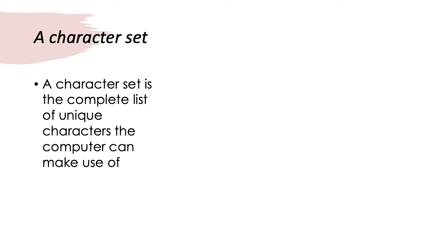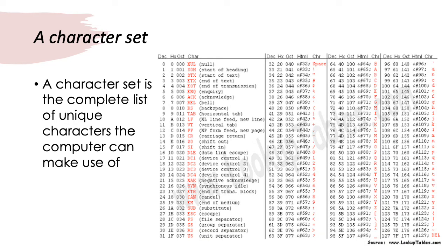So, let's look at how computers store characters. A character set is simply the complete list of unique characters that a computer can make use of. In this image here, we have what we call a character set. It lists all the unique characters that the computer can represent. And we can pick out each individual character.